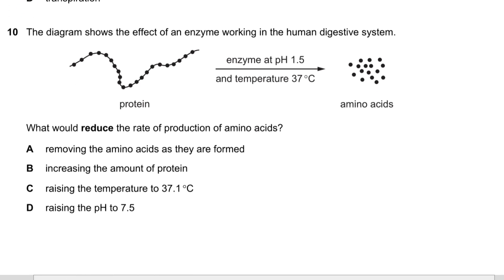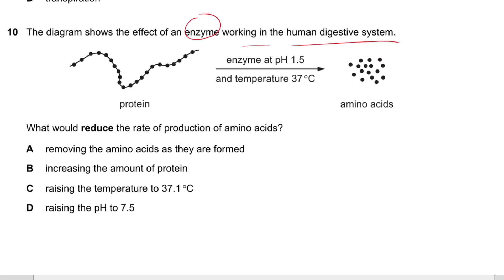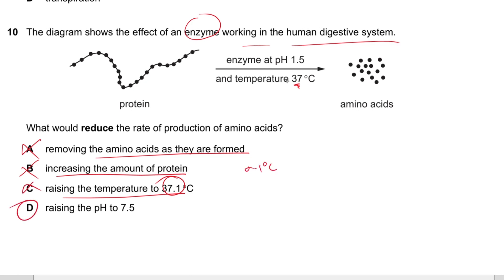Question 10: The diagram shows an enzyme working in the human digestive system. What would reduce the rate of production of amino acids? Removing amino acids increases the rate, increasing protein amount — no. Raising temperature by only 0.1°C is not drastic enough. Raising the pH to 7.5 is a very drastic change, so that would reduce the rate. Answer is D.